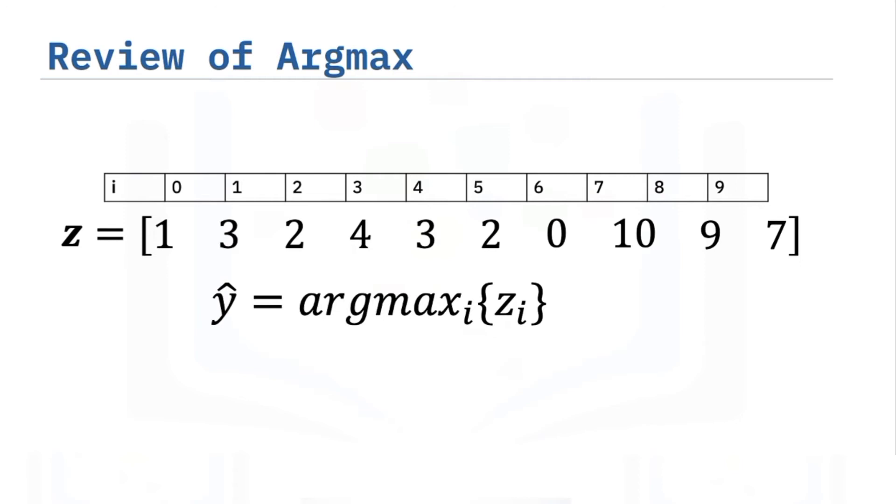In this example the largest value of z is 10 and the corresponding index is 7. So the argmax function will return a 7.